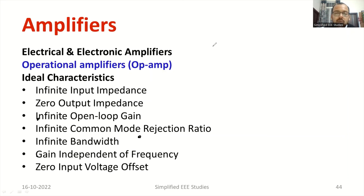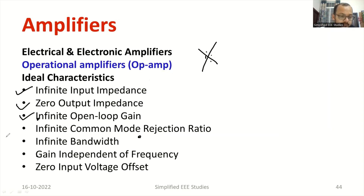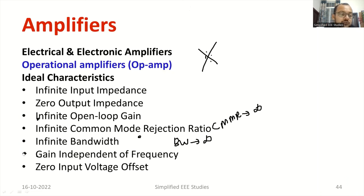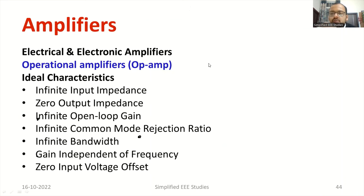What are the ideal characteristics of op-amp? This is one of the important questions in competitive and university examinations. The ideal op-amp has infinite input impedance, zero output resistance, infinite open-loop gain, infinite CMRR (Common Mode Rejection Ratio), infinite bandwidth, and the gain should be independent of frequency. Also, zero input voltage offset. Try to make a separate note of these ideal characteristics.